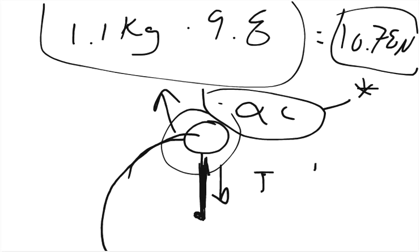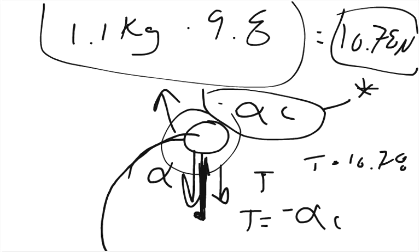If T equals 10.78, we know that T equals the negative AC, which is the centripetal force. In saying negative, I'm saying that this vector right here would be a negative quantity. Because the force pulling inward is AC, then the negative of that negative quantity would be our positive. The tension equals the centripetal acceleration.